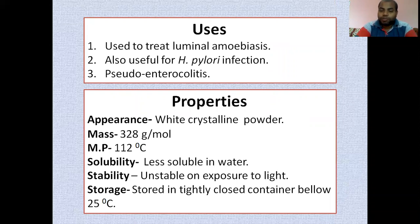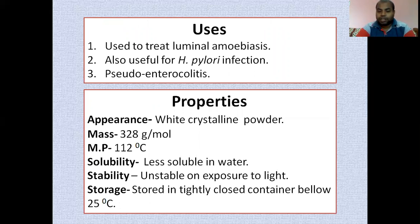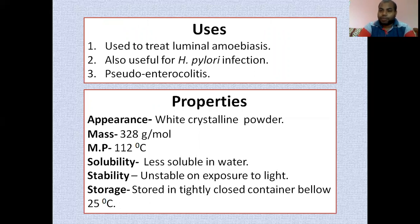Diloxanide Furoate is also useful for Helicobacter pylori infection and pseudomembranous enterocolitis. In terms of properties, it is a white crystalline powder with a molecular mass of 328 g/mol and a melting point of 112°C. It is less soluble in water and is generally unstable in the presence of UV light and sunlight. It can be stored at room temperature.